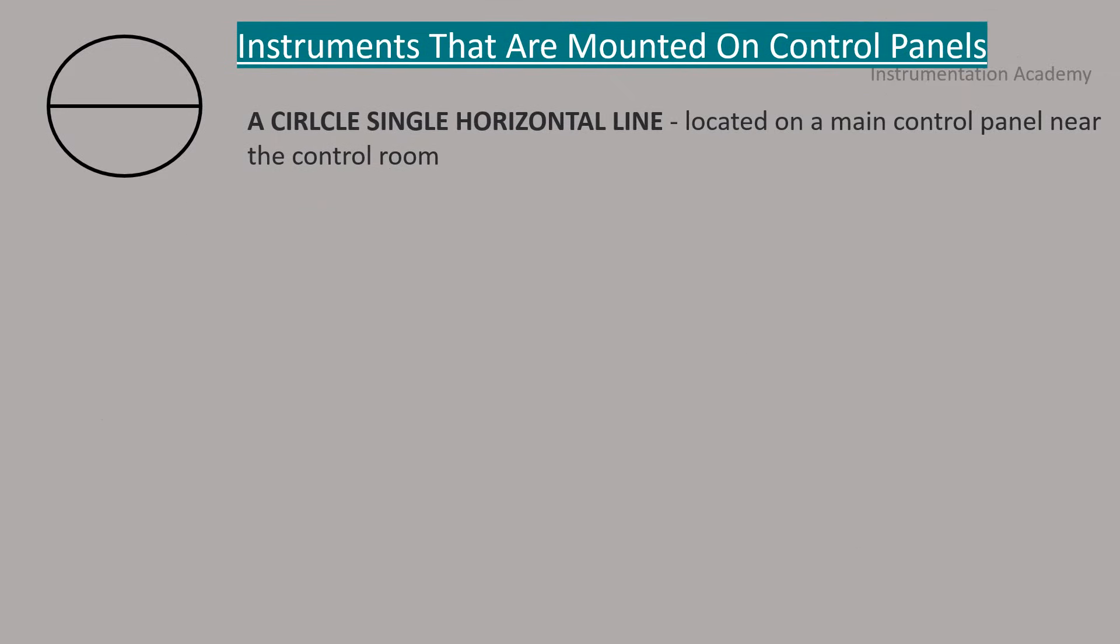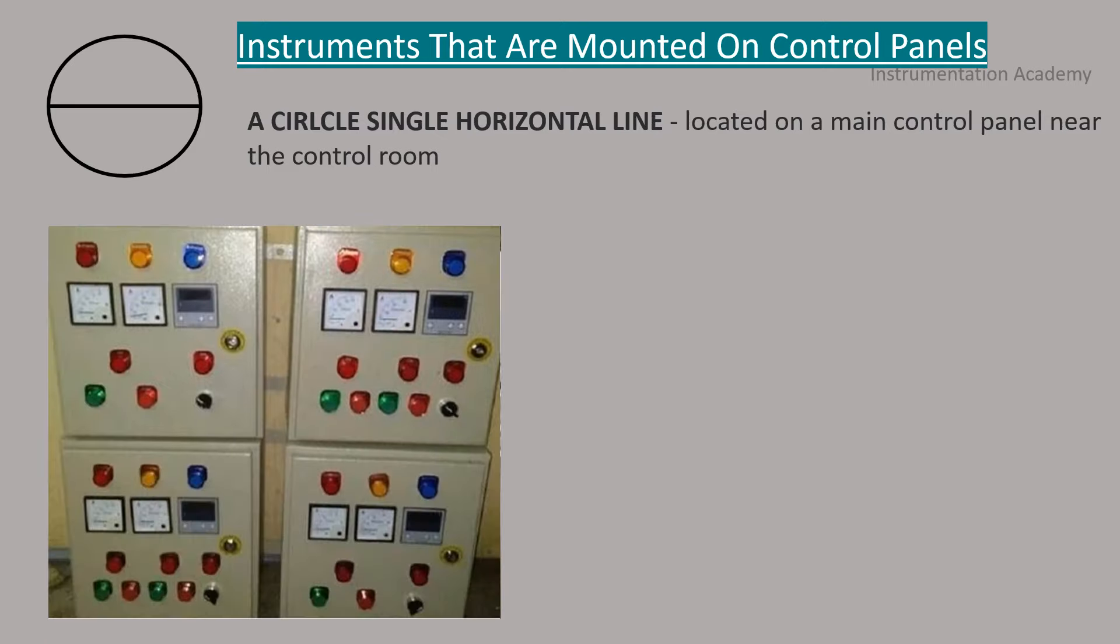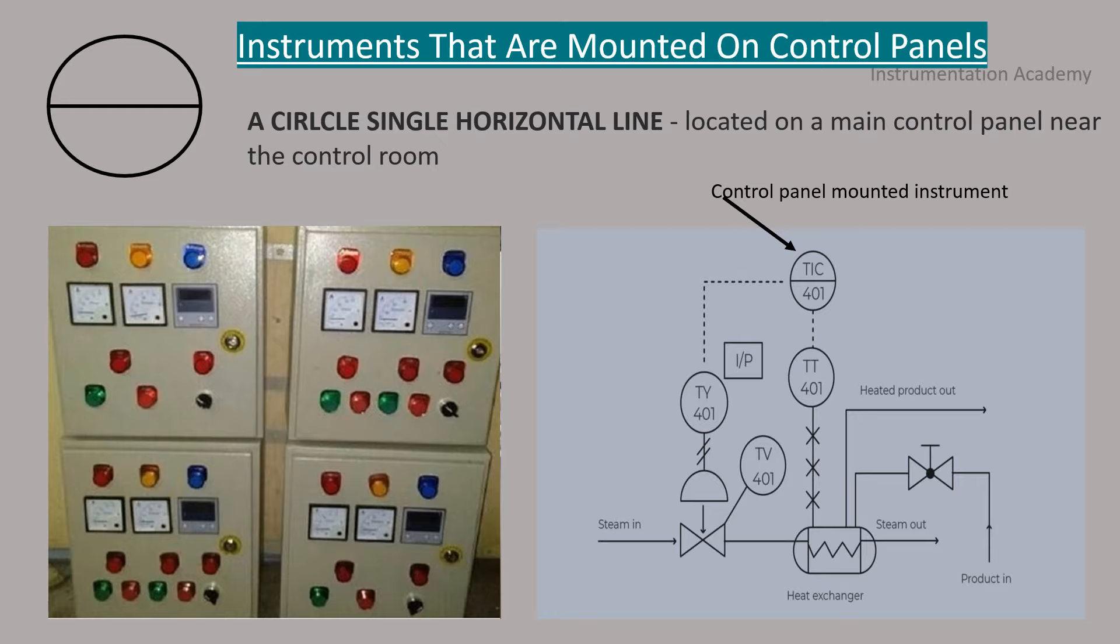A circle with single horizontal line. This represents instruments that are mounted on the control panel. This is how the control panel mounted instruments represented in a P&ID.